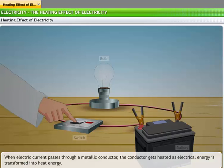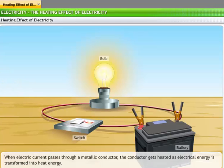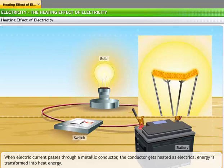When you switch on a bulb, the thin metallic wire or filament in the bulb turns red and the bulb starts glowing. This is because when an electric current passes through a metallic conductor, the conductor gets heated. Thus, electrical energy is transformed into heat energy. This is called the heating effect of electricity.